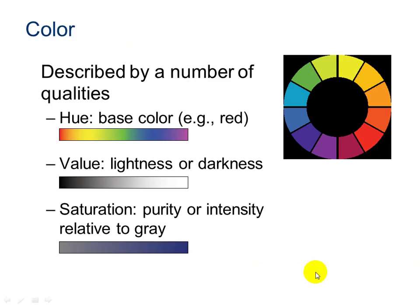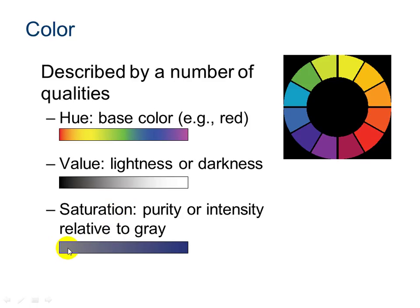Color is another element that we need to deliberately consider when creating our designs. There are several different qualities of color. The first is hue, which represents the base color such as red, purple, blue, green, orange, or yellow. Another characteristic is value — is it light blue or dark blue? And then saturation refers to the intensity of the color relative to gray — how much color is present, whether a little or a lot.